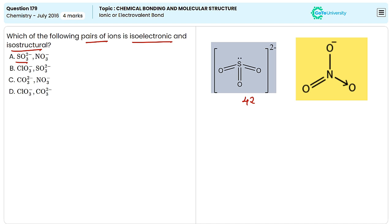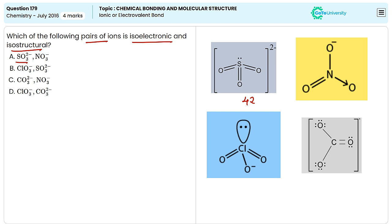And the other ions given here are ClO3- and CO32-. All of these ions have the given structures.